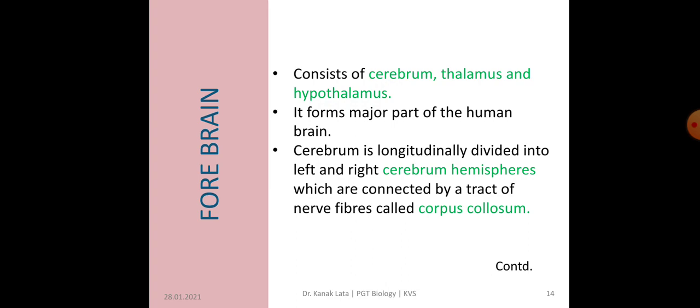Now, we will discuss in detail about the forebrain. Forebrain consists of three parts: cerebrum, thalamus and hypothalamus. The forebrain forms major part of the human brain. A deep cleft divides the cerebrum longitudinally into two halves, and these two halves are called left and right cerebral hemispheres.